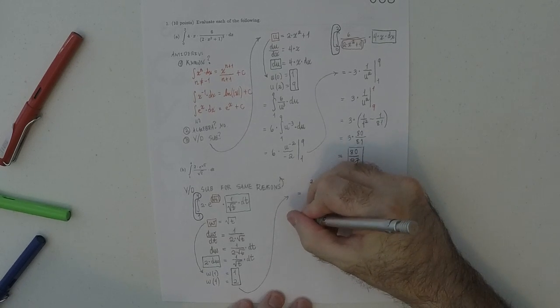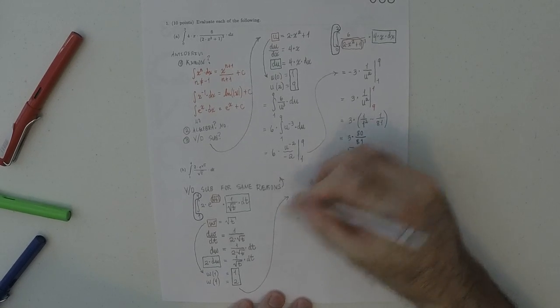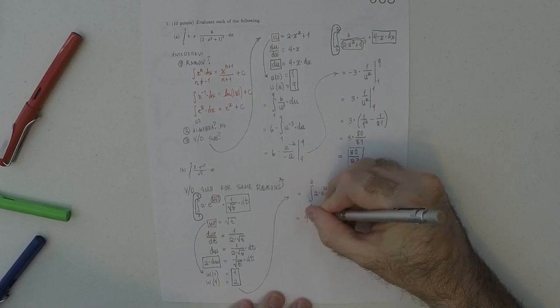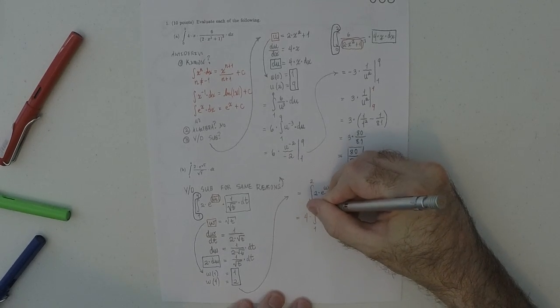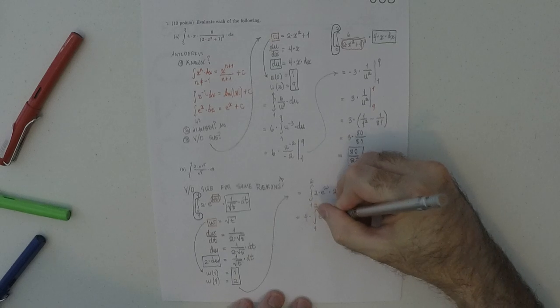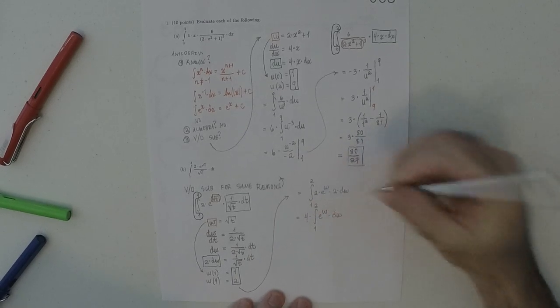So, now I'll factor the 2 and the 2 out as a 4. So, 4 integral 1 to 2. Exponential of w. dw.